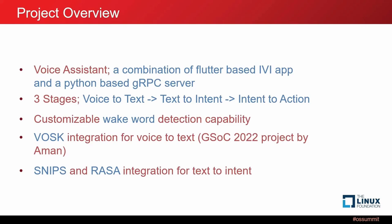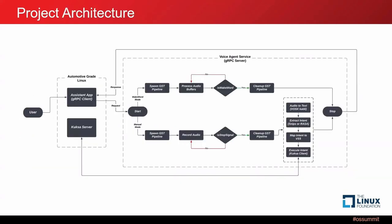In this project we did WASC integration to convert voice to text, which was done as part of last year's GSoC project by Aman. This year we integrated the Snips and Rasa intent engines to extract intent from voice commands. Before getting into details, I'll explain the project architecture. In Automotive Grade Linux we have our Kuksa server running, our voice assistant app running, and our voice agent service running. The user interacts with the voice assistant app, which has two modes: wake word mode and manual mode.